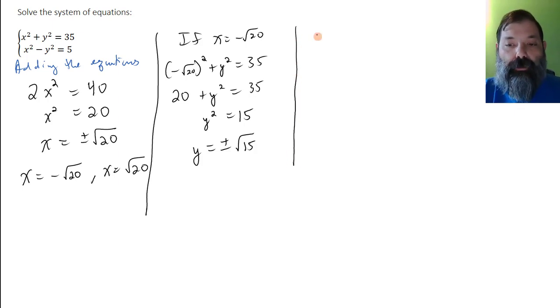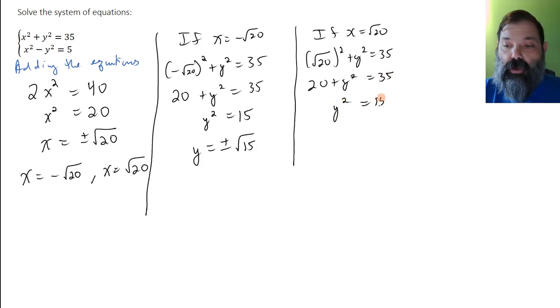Similarly, if x is positive root 20, then root 20 squared plus y squared is 35, giving 20 plus y squared equals 35, so y squared is 15. Thus y is positive or negative square root of 15. So if x is square root 20, there are two values for y.